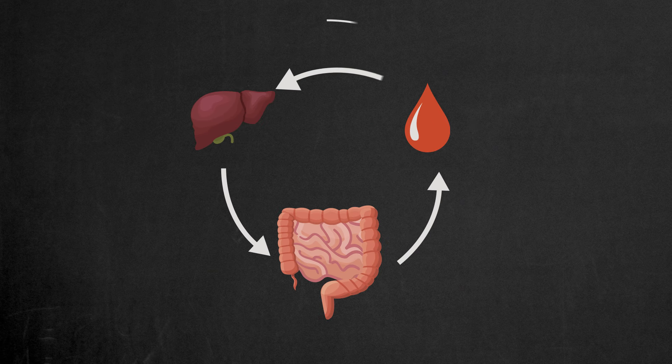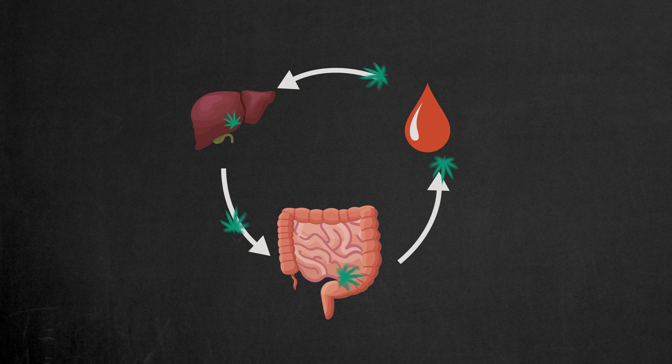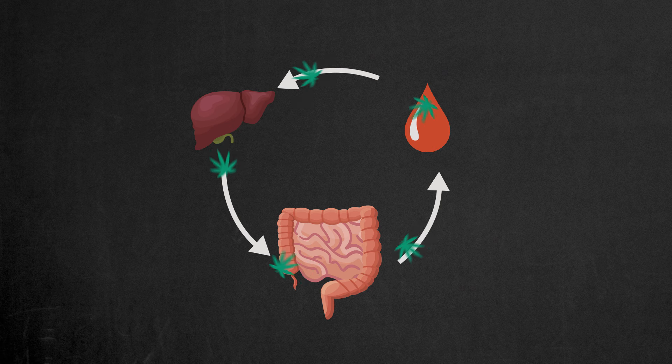It must interfere with enterohepatic circulation, so the THC metabolites in the intestines are not reabsorbed back into the blood and not excreted through the urine.